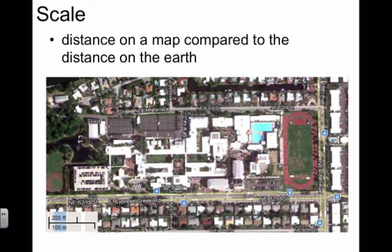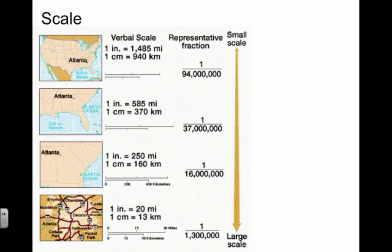But in a map, scale means the distance on a map compared to the distance on Earth—how much of the Earth has been shrunk down to fit on an image. To understand scale in a map sense, it's really representative of a fraction.